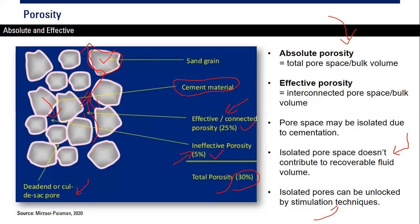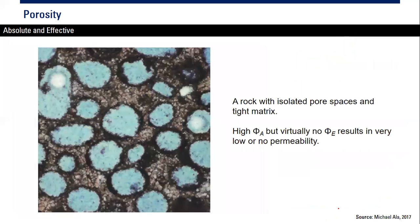We can still produce from ineffective porosity if we perform stimulation techniques, for example hydraulic fracturing. Isolated pores can be unlocked by such stimulation techniques. This next picture shows a real image of absolute and effective porosity — a rock with isolated pore space and tight matrix. The blue zones are the pores and the brown zone is the matrix or grains. The pores are not connected, so they are ineffective for production flow. This is typically found in tight reservoirs.